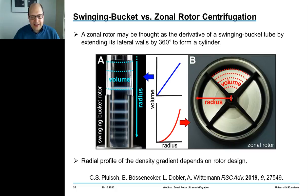If you compare a centrifuge tube in a swing-out rotor with a zonal rotor, you can consider the zonal rotor as an extension of the centrifuge tube by 360 degrees. There is still an important difference: the profile of the density gradient is very crucial to get proper separations.